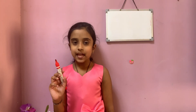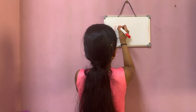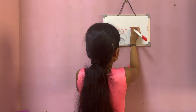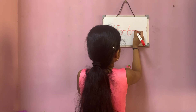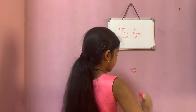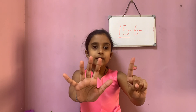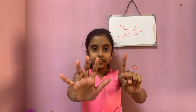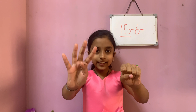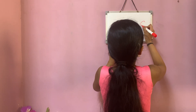Let's see another example. Here I am writing fifteen minus six. Here the big number is fifteen. So big number fifteen in mind and small number six in hand. Now let's count back from fifteen: fourteen, thirteen, twelve, eleven, ten, nine. So the answer is nine.